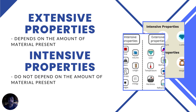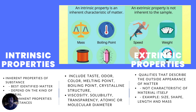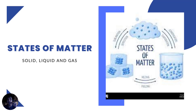Extensive properties depend on the amount of material present, while intensive properties do not depend on the amount of material present. There are also intrinsic and extrinsic properties. Intrinsic properties are inherent properties of a substance that depend on the kind of material — permanent properties including taste, odor, color, melting point, boiling point, crystalline structure, viscosity, solubility, transparency, and atomic or molecular diameter. Extrinsic properties describe the outside appearance of matter and include size, shape, length, and mass.